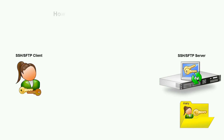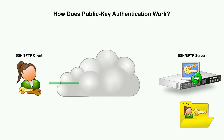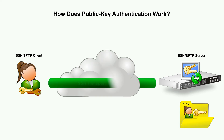Once a Secure Shell server has been properly configured with the authorized Public Key for a user account, the Secure Shell client can attempt to use its key pair to authenticate to the server. To start off, encryption is established between the client and the server according to the Secure Shell protocol.